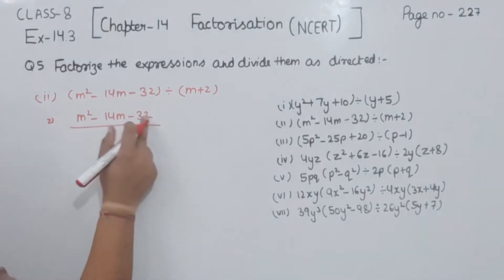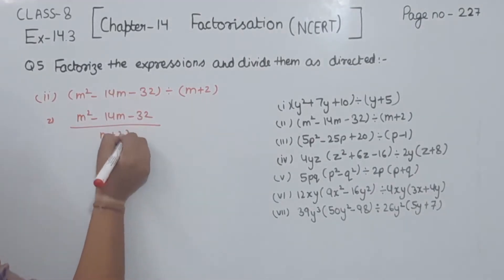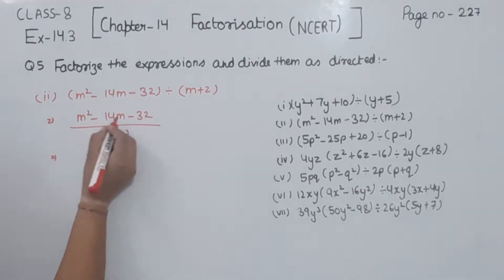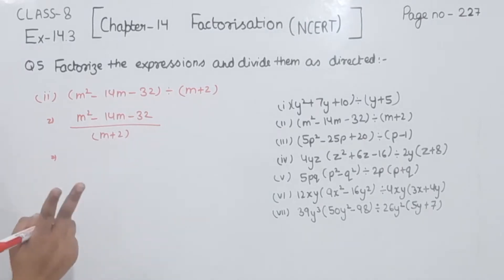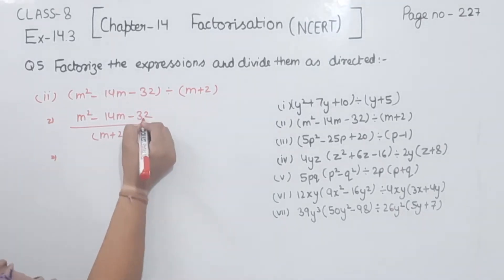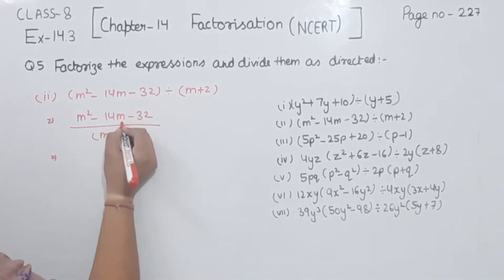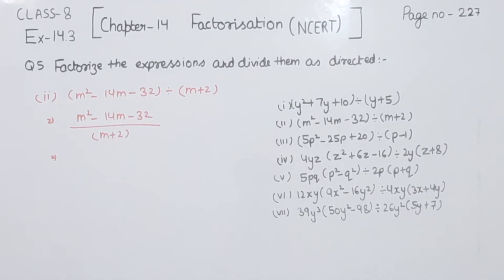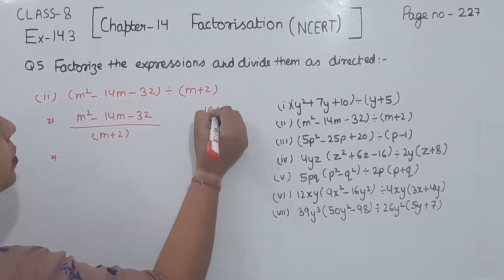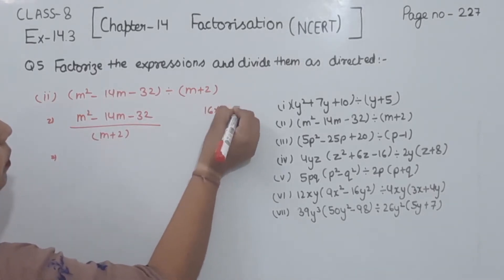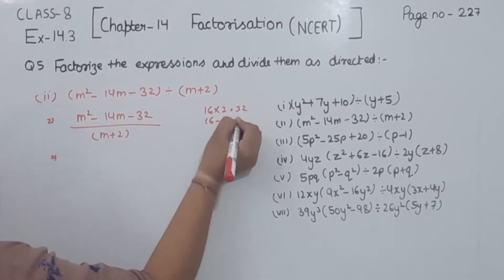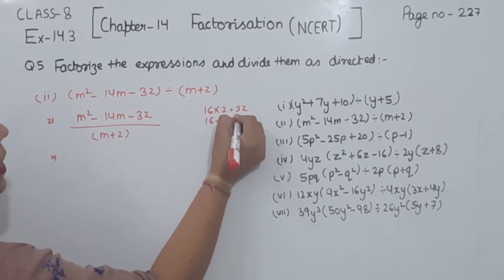We are going to factorize this one. So I am going to write m plus 2 in the denominator. Now we are going to find two numbers which when multiplied give 32 and when we subtract we get 14. The numbers are 16 and 2: 16 times 2 is 32 and 16 minus 2 is 14.